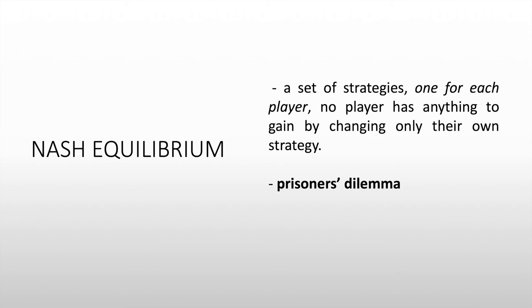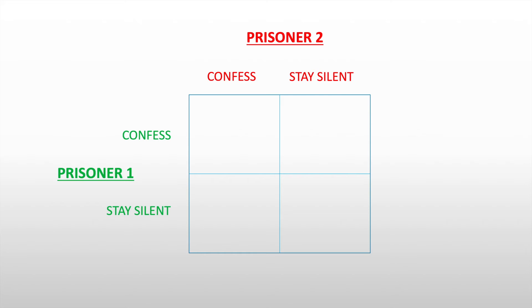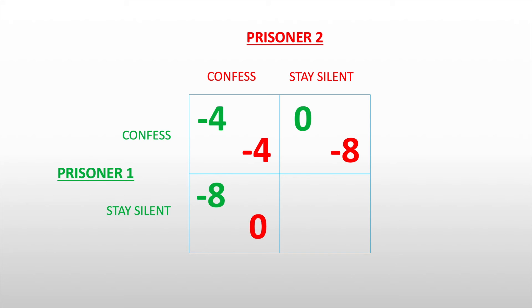The very common example here is the prisoner's dilemma. We have two prisoners who are being interviewed by police officers, and each has two actions: confess or stay silent. This is our payoff table. If both confess, each is imprisoned for four years. If prisoner one confesses and prisoner two stays silent, prisoner one goes free and prisoner two is imprisoned for eight years. If prisoner one stays silent and prisoner two confesses, prisoner one gets eight years and prisoner two goes free. If both stay silent, each is imprisoned for only one year.